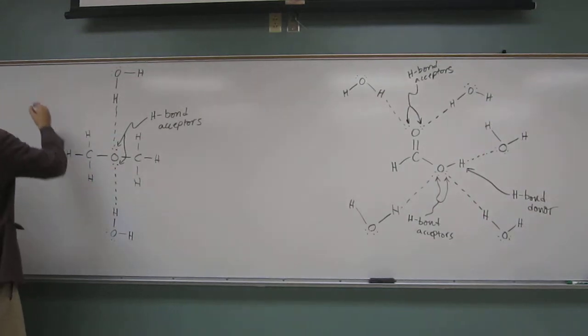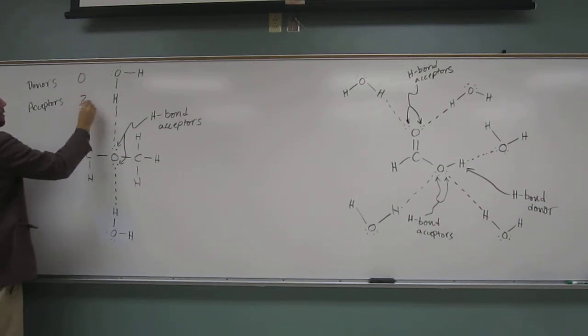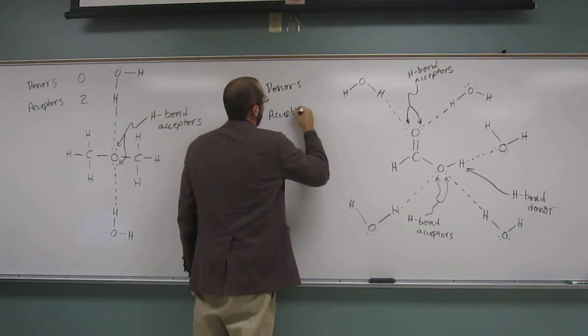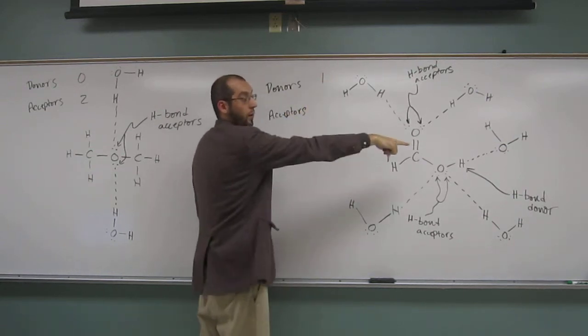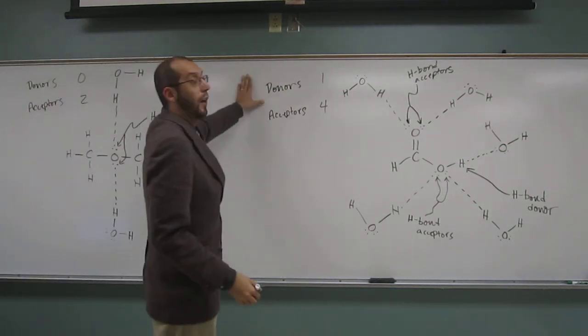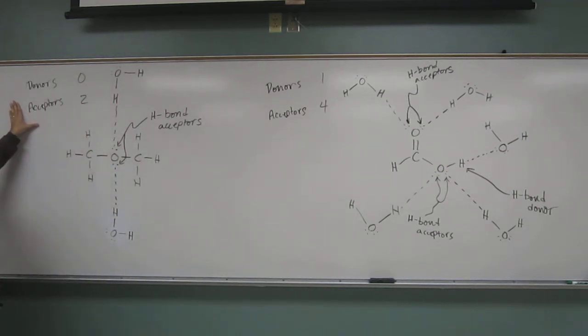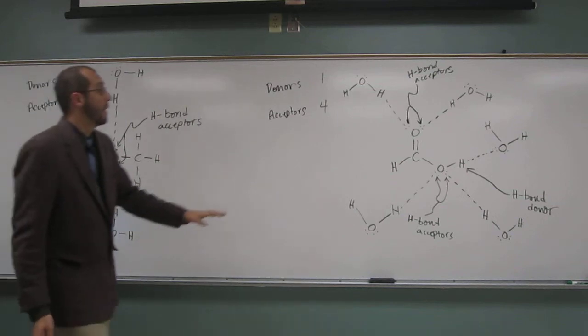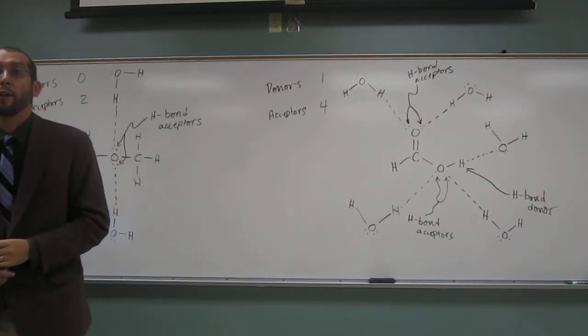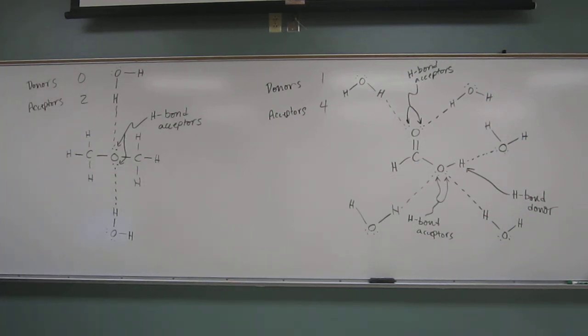So, we wanted to say, well, how many donors do we have and how many acceptors? And dimethyl ether, we have, what? Zero donors, right? And two acceptors. Total. What do we have? Donors. And acceptors. So, donors, we only have one. And acceptors, we have one, two, three, four. Okay? So, this can make hydrogen bonds both donating them and accepting them. This one can only make hydrogen bonds if you've got the water molecules in there to donate them. So, it can't make hydrogen bonds with itself if you want to think about it that way. This thing can make hydrogen bonds with itself because it's got both donors and acceptors. This one's only got acceptors, so it can't make hydrogen bonds with itself. But it can make with water. Any questions about that? Okay, cool.